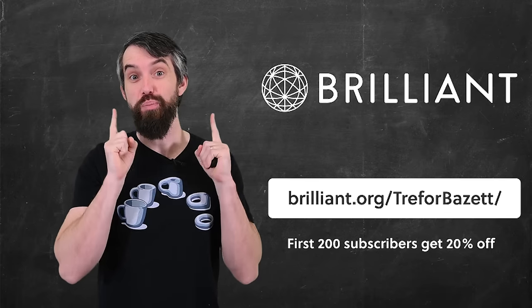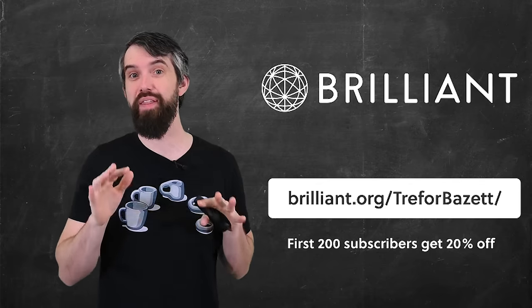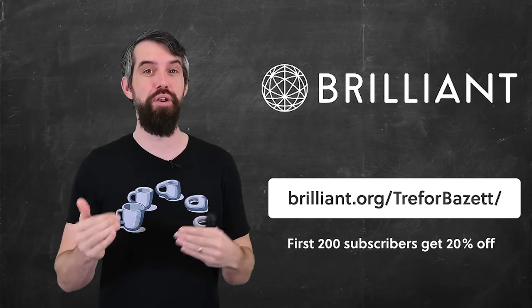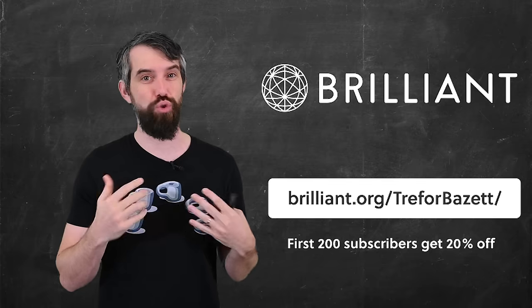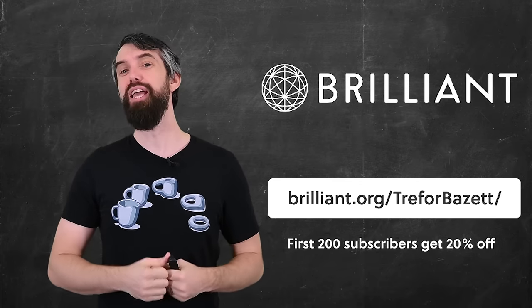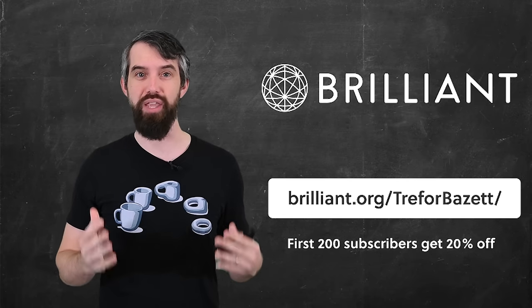So, go to Brilliant.org slash Trevor Bazett, the link is down in the description, to check out everything that they have for free for a full 30 days, or the first 200 of you to click that link will get an additional 20% off an annual premium subscription. With that said and done, I hope you enjoyed this video. If you have any questions, leave them down in the comments below, and we'll do some more math in the next video.